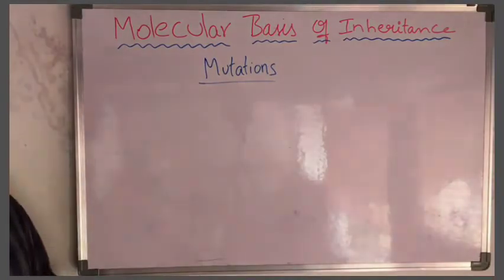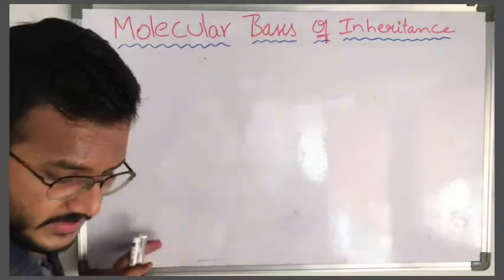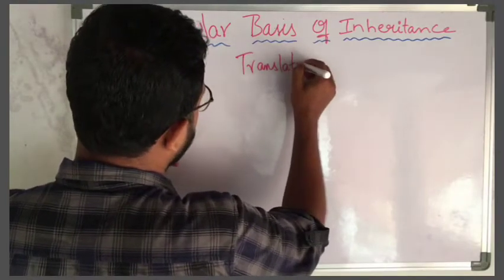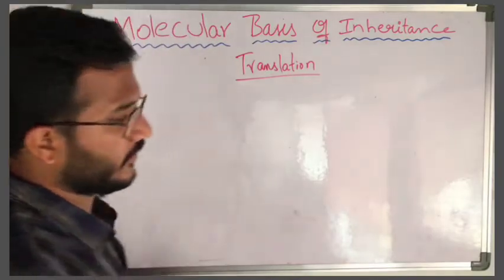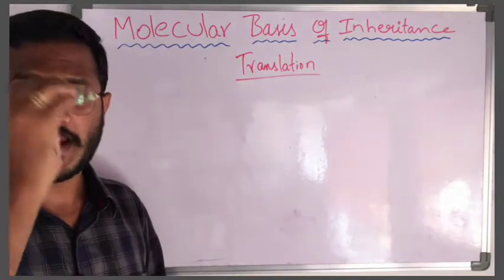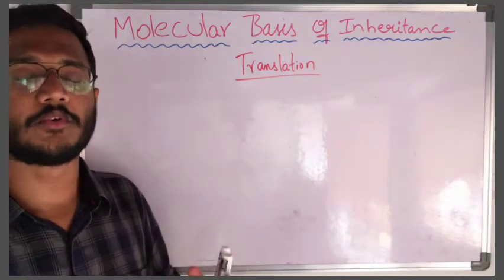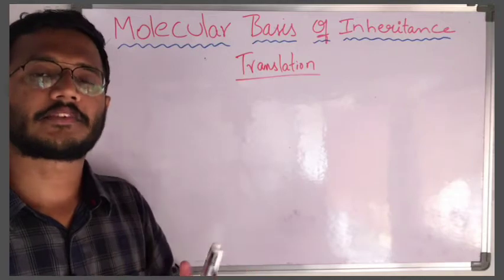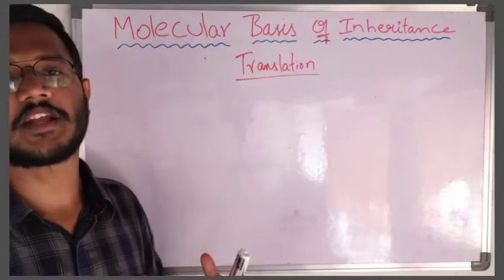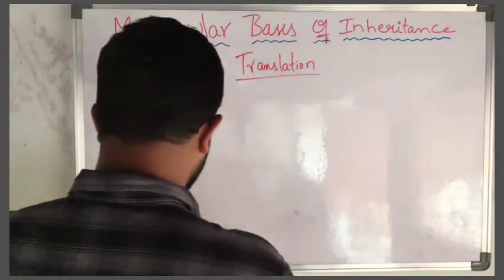Now we will see the protein formation process — that is translation. The transcription process produces mRNA from the template DNA strand. The mRNA is matured or modified and released from the nucleus into the cytoplasm. The fate of that mRNA leads to the production of proteins, which we will now see.